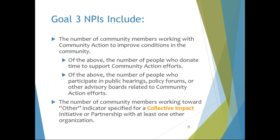To frame how we look at and report on those three national goals is a set of National Performance Indicators, or NPIs. The NPIs have changed based on those three goals, and the ones associated with National Goal 3 are: the number of community members working with community action to improve conditions in the community, and the number of community members working toward other indicators specified for a collective impact initiative or partnership with at least one other organization. Collective impact is specifically stated as an indicator to measure community level work, though it certainly isn't the only way to do and report on community level work.